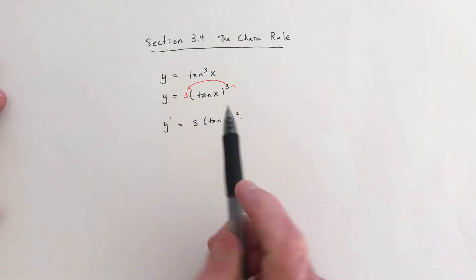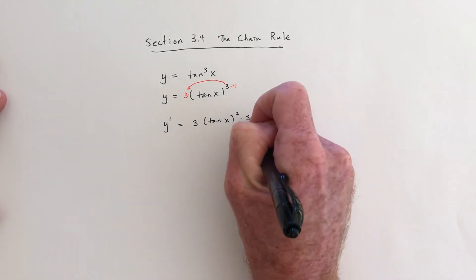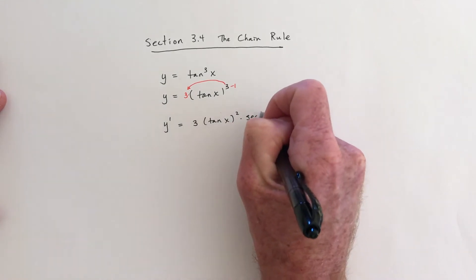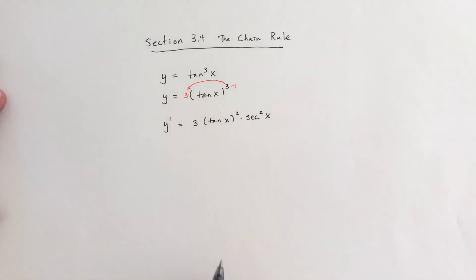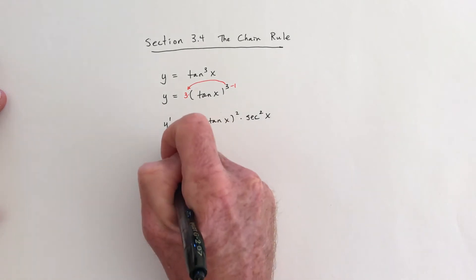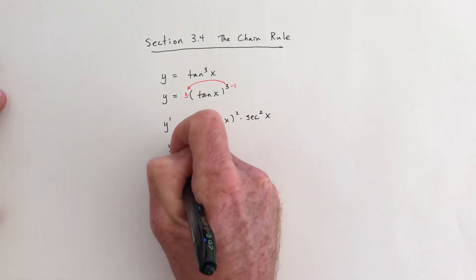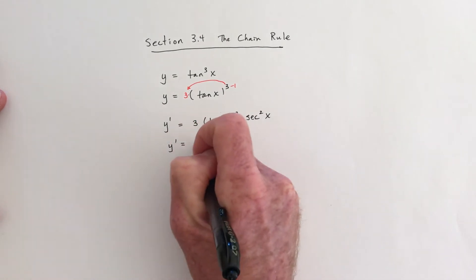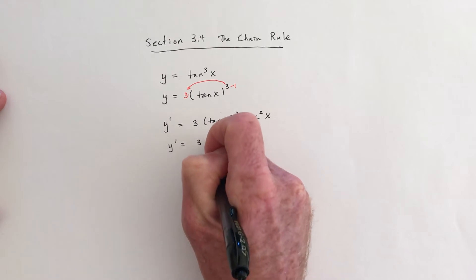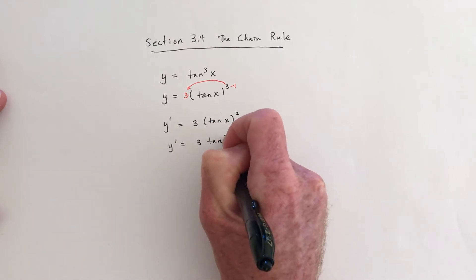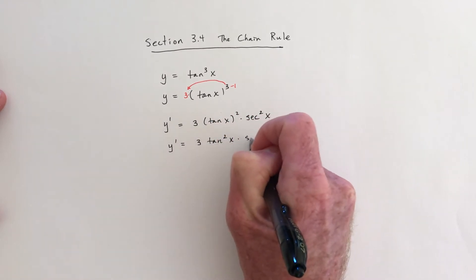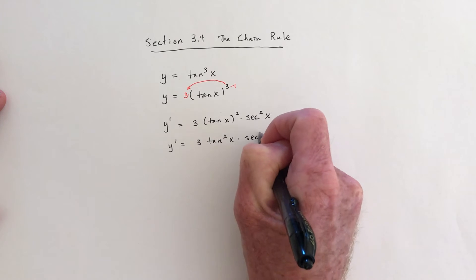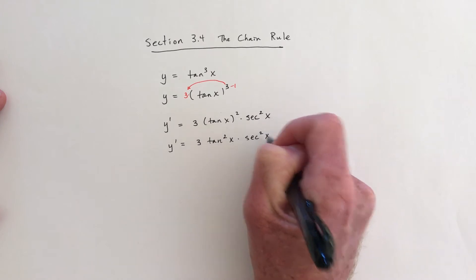The derivative of tangent is secant squared. That's the derivative. I would prefer to write it without the parentheses and just go 3 tangent squared times secant squared.